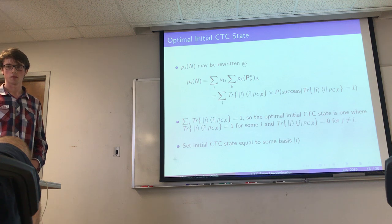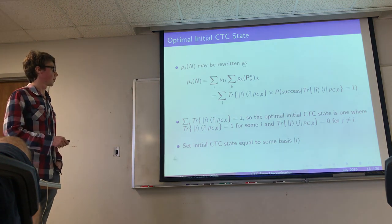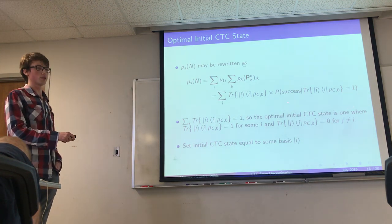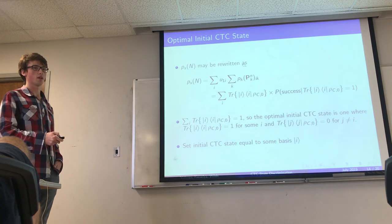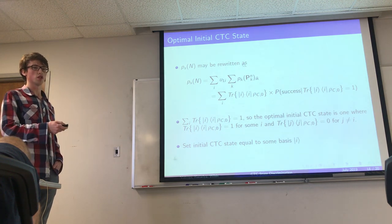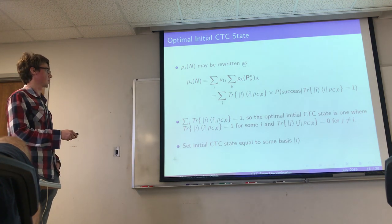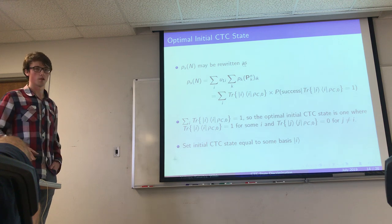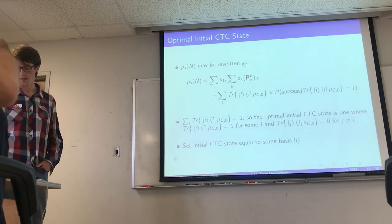The optimal initial CTC state can be calculated and depends on N, the number of copies — so it could change as N gets larger. The probability of success given measuring outcome i for the initial CTC state changes with N, so determining the initial CTC state using this equation ends up being dependent on N.